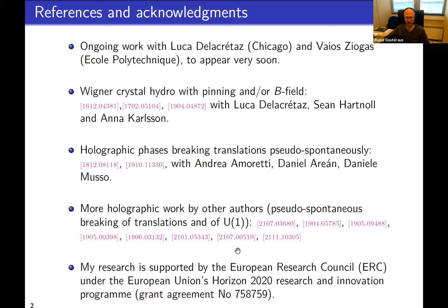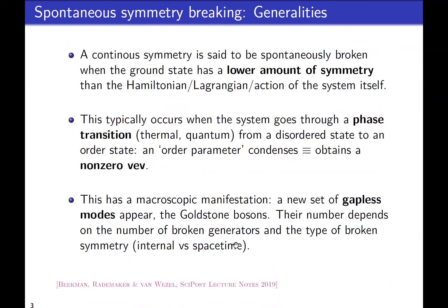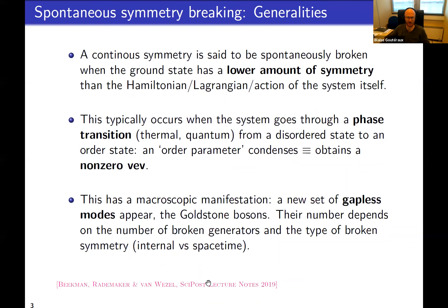I'll start with some generalities about spontaneous symmetry breaking — this is all very well known, and for more details I would encourage reading a recent review by these people, which is very nice. We say that a continuous symmetry is spontaneously broken when the ground state of the system has a lower amount of symmetry than what the Hamiltonian, Lagrangian, or action of the system would suggest.